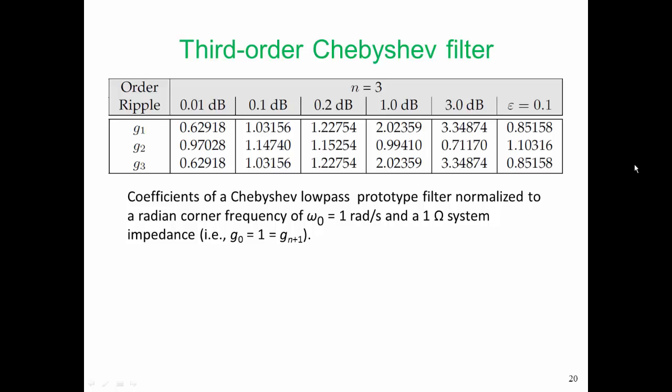There are a number of ways we can come up with the element values of a filter. What is shown here are the coefficients of a third order Chebyshev filter. Traditionally, these are normalized to a radian corner frequency of one radian per second and a one ohm system impedance. And we translate or transform our filter to whatever other value of system impedance or corner frequency that we want.